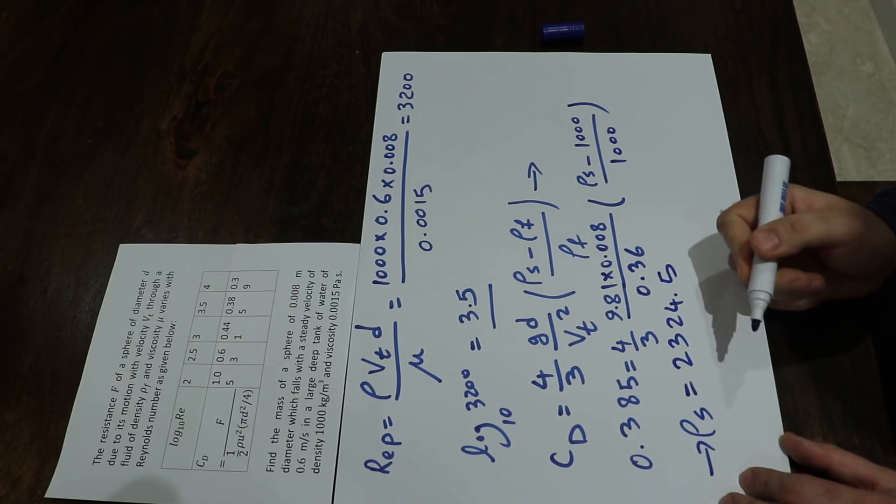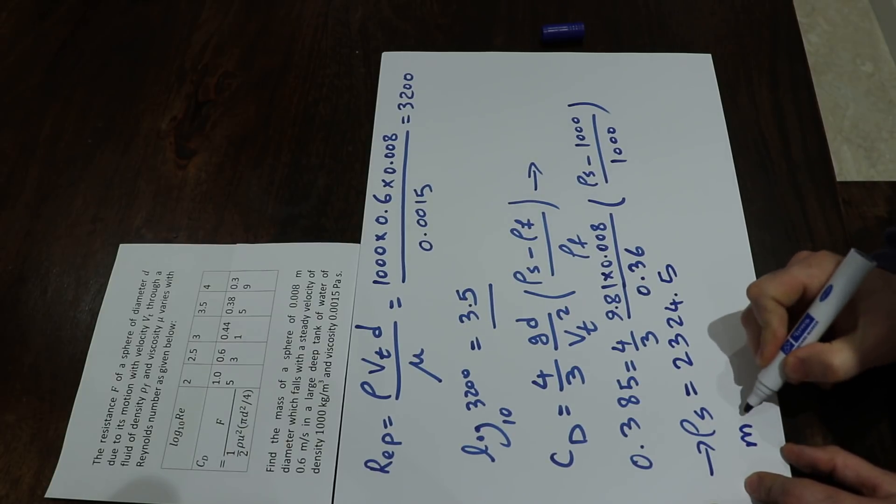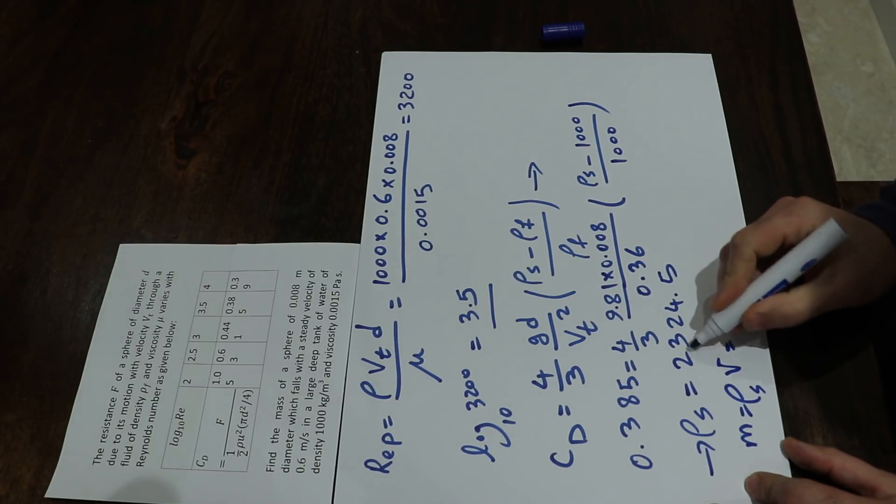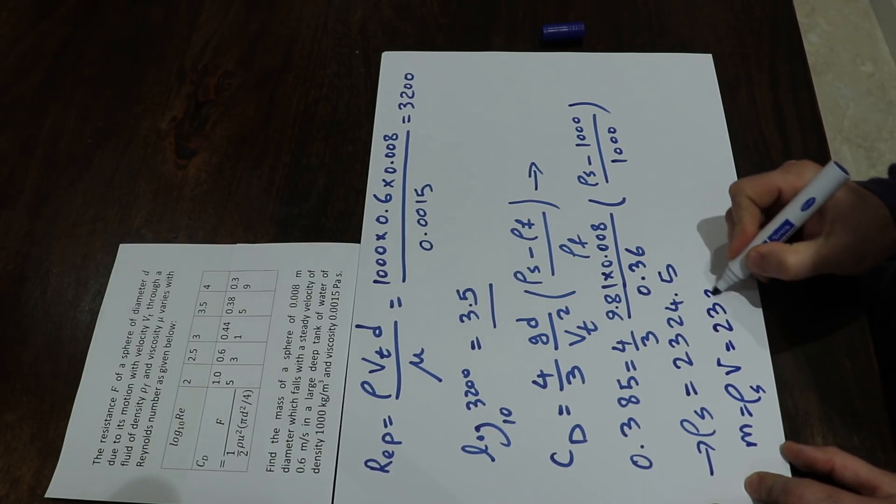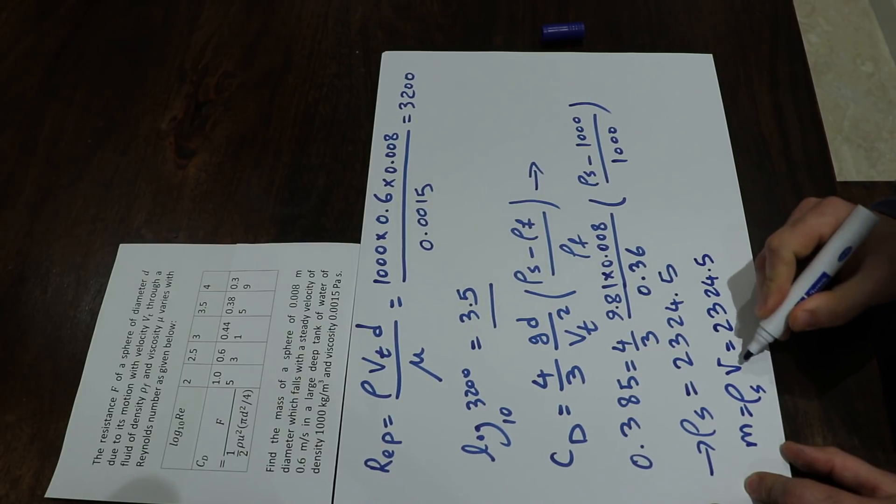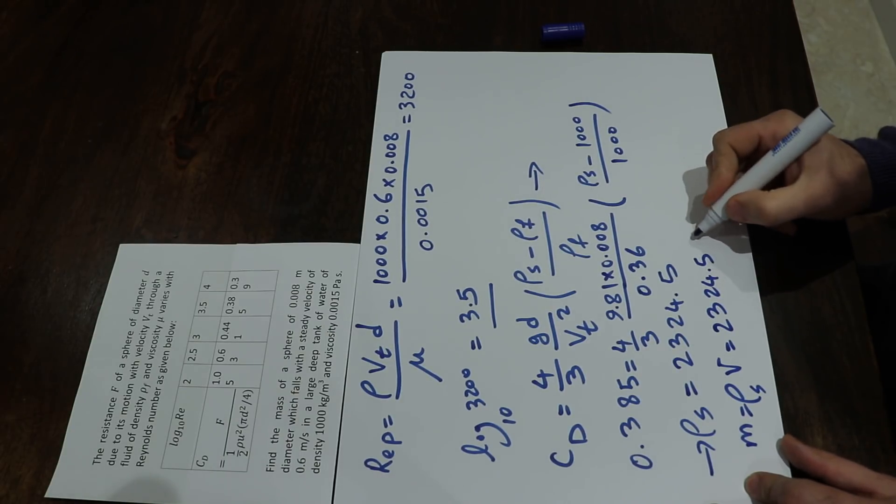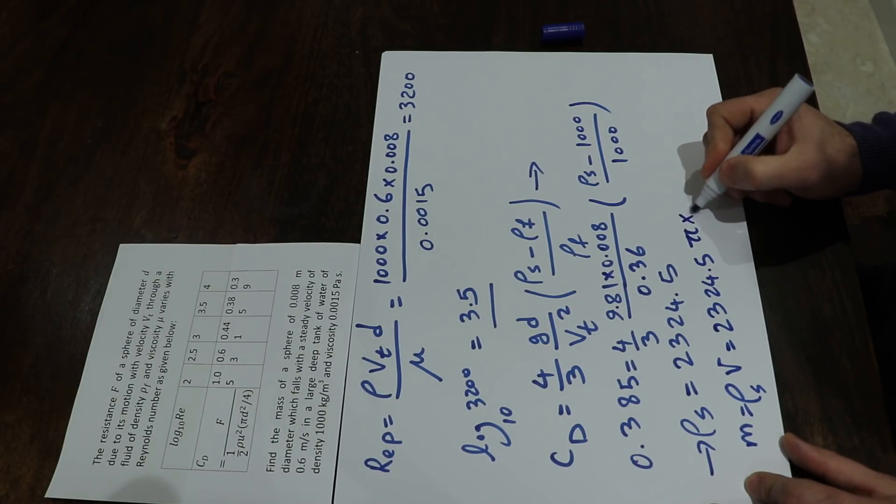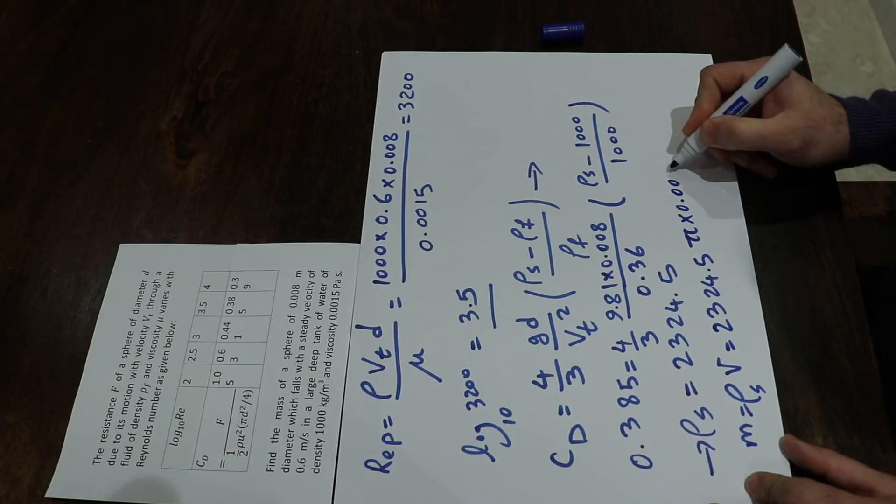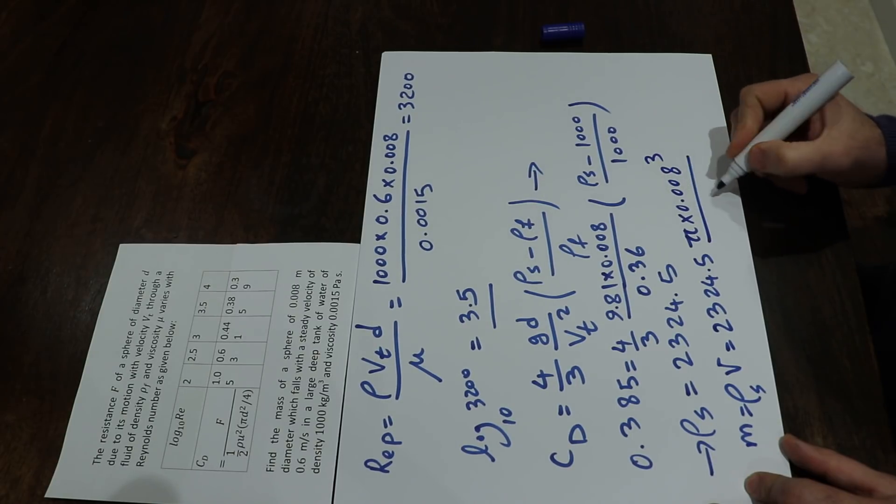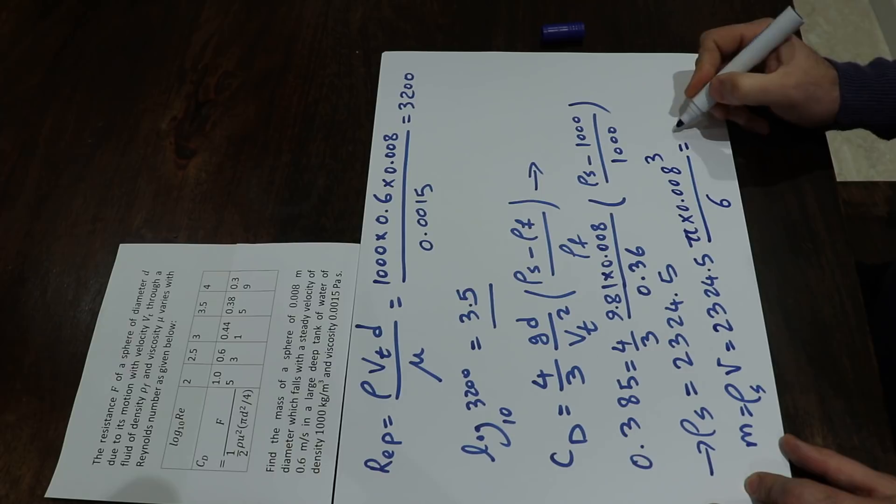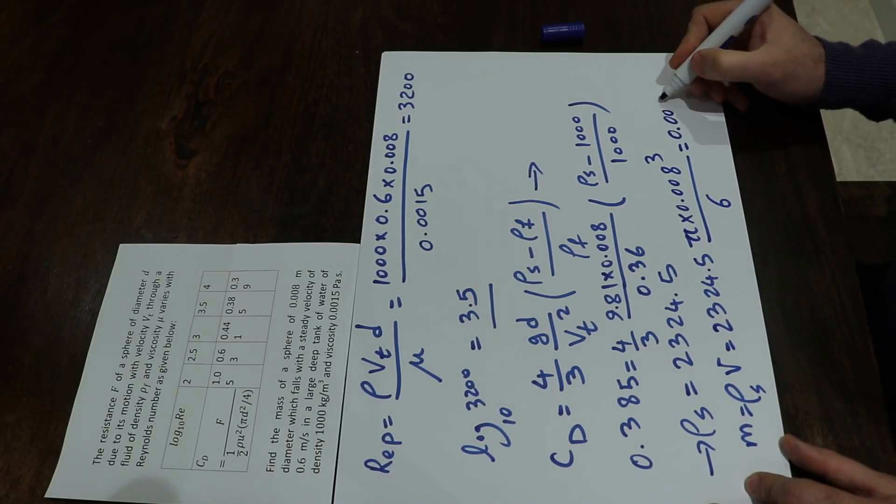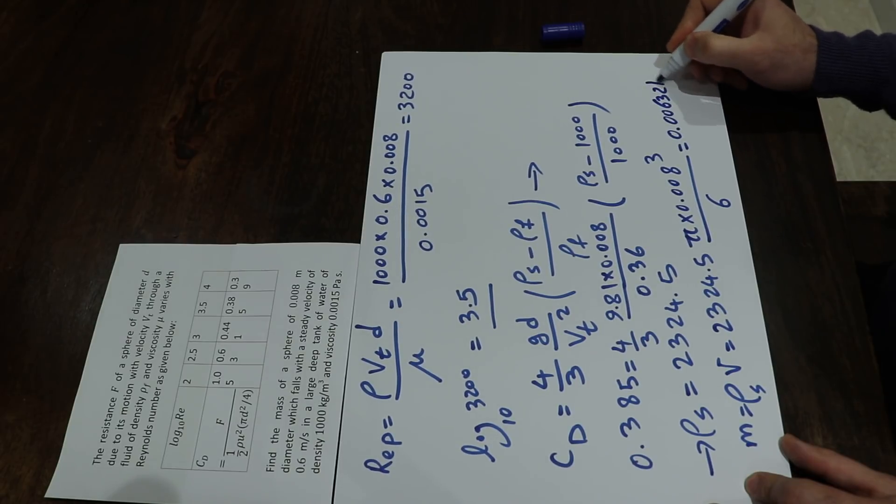The question asks for the mass of that sphere. We know that mass equals density times volume. Density is 2,324.5 times volume, which is π times d³ divided by 6, which is π times (0.008)³ divided by 6, which equals 0.00632 kilograms.